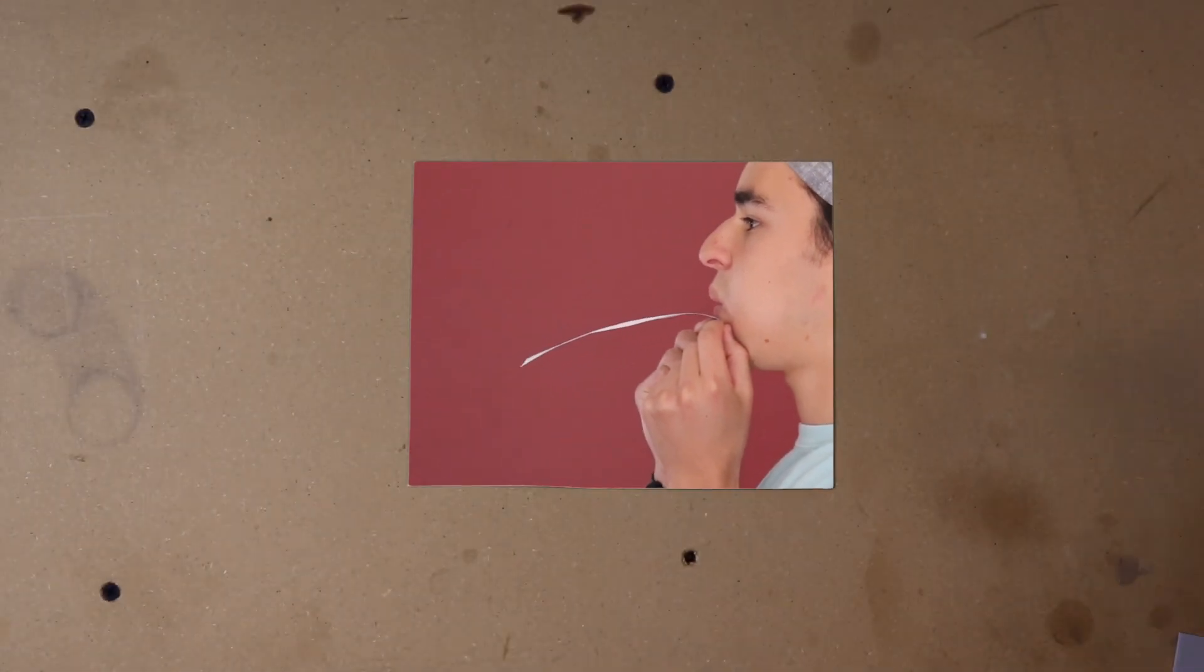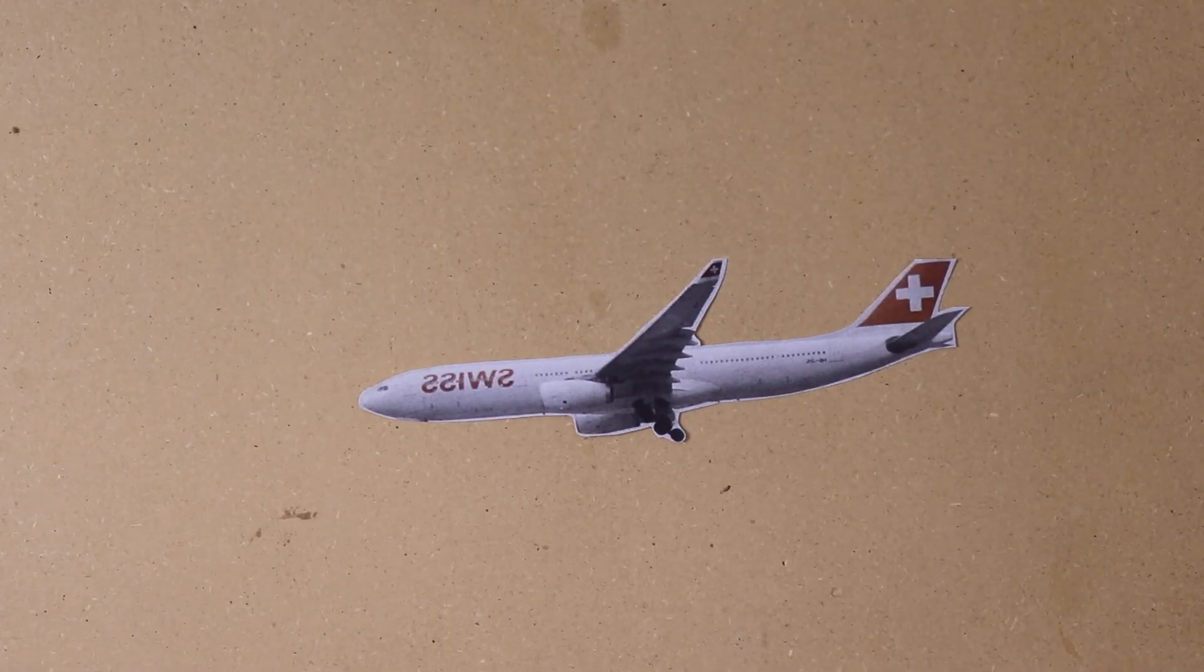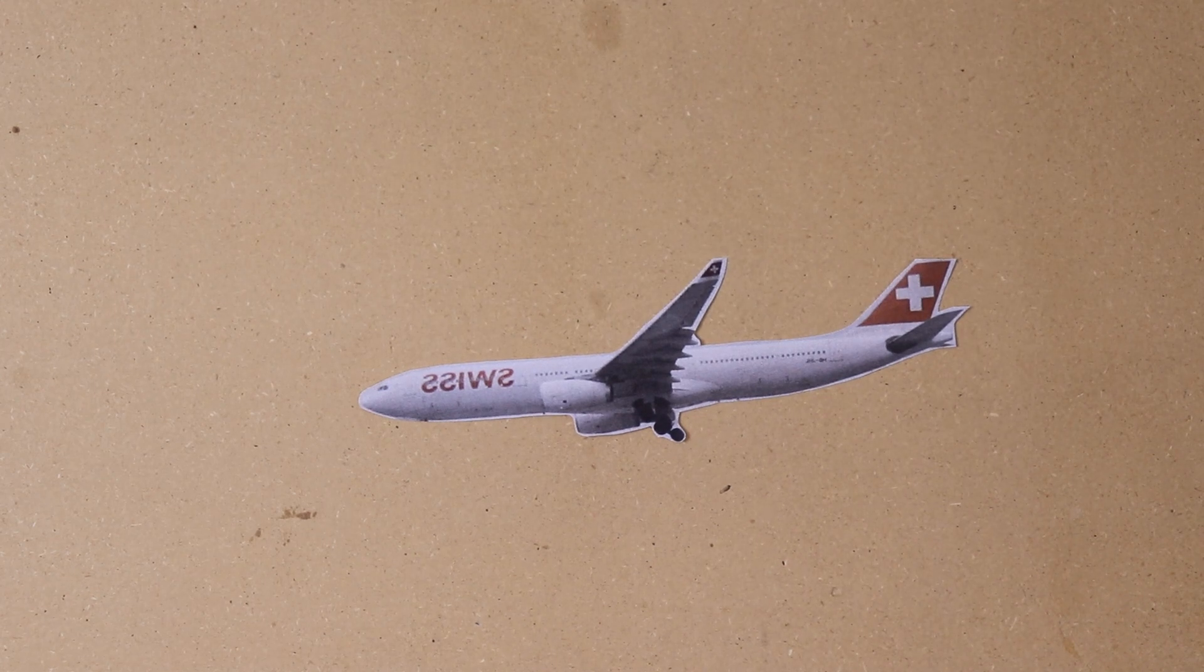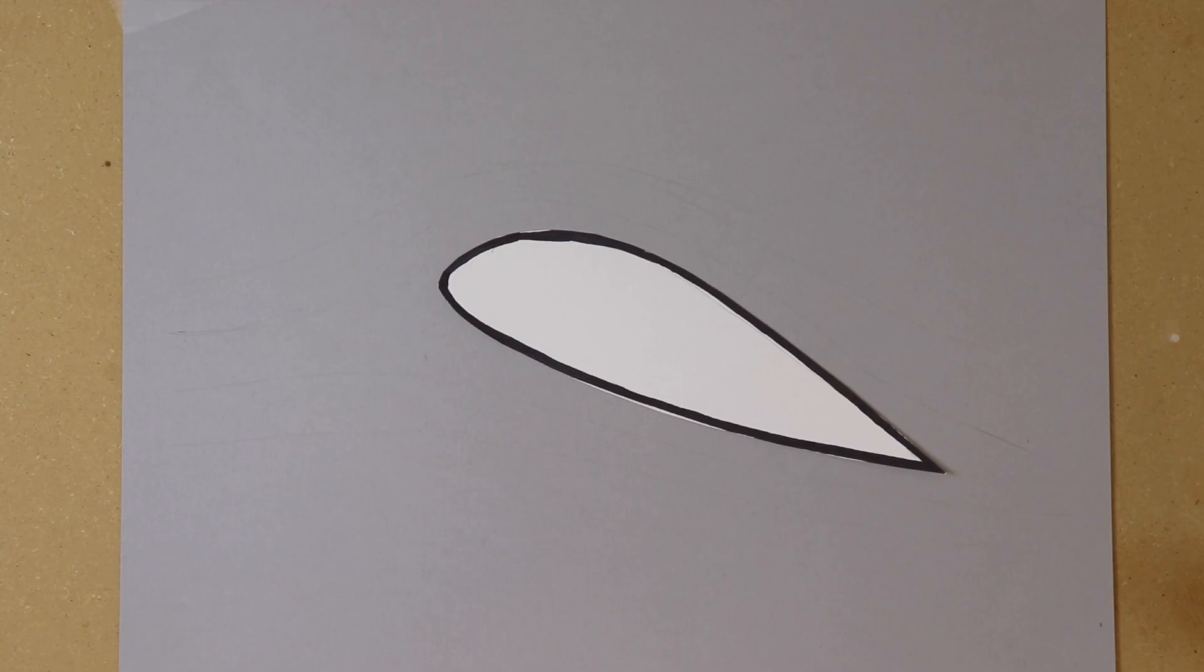So now we can finally revisit our airplane. The secret of an airplane lies in the design of its wings. If we were to cut open one of the wings and look at the cross section, this is what we would see.